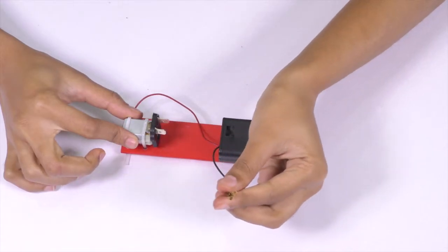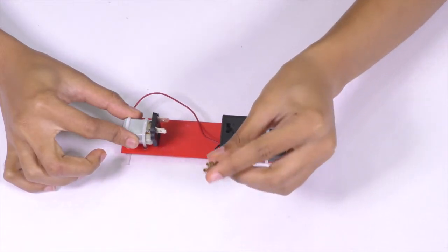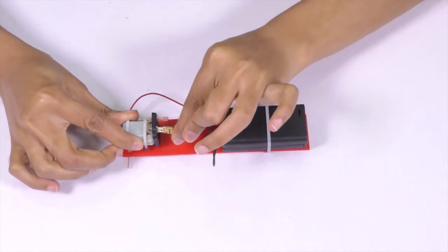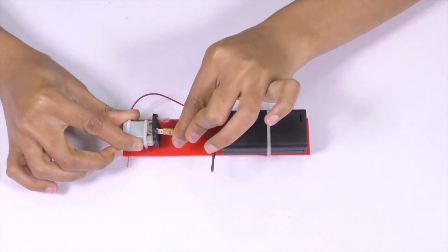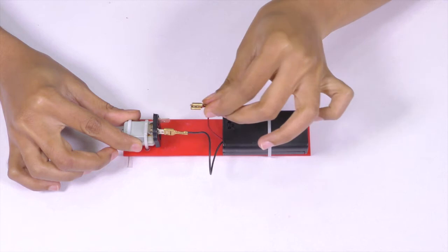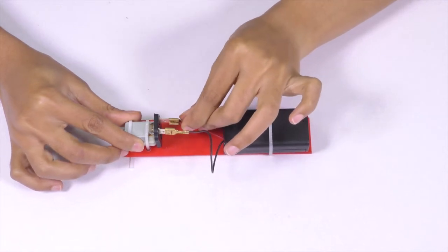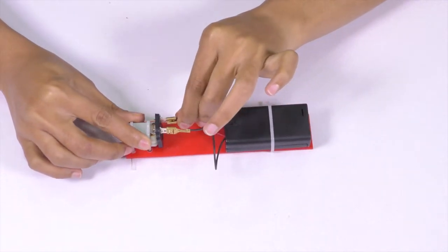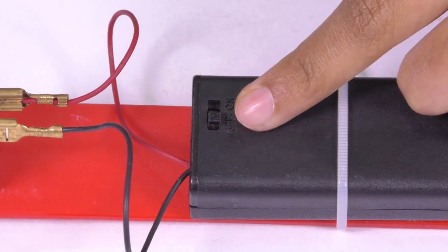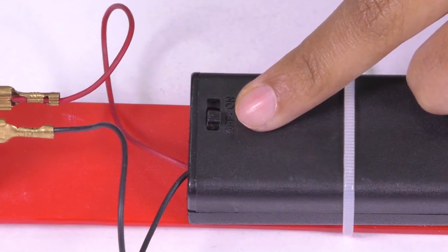Now, attach a wire of the battery holder to the motor. We will do this by using the connectors at the end of the wire and the pins on the motor. Similarly, attach the other wire of the battery holder to the other pin on the motor. Make sure that the switch on the battery holder is in the OFF position.